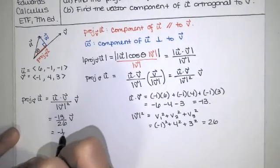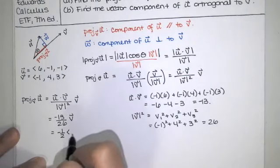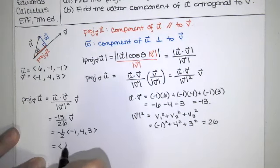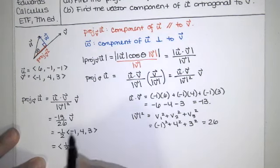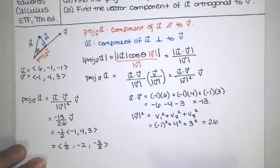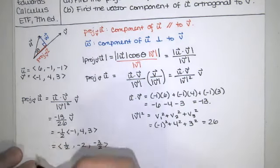So we have -13 over 26 here times the vector v. That simplifies nicely. So you have -1/2 times the vector v, which is right here in component form. And then we just distribute the 1/2. Half of 4 is 2. So that's the answer for part A.